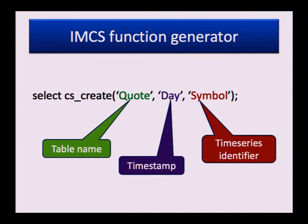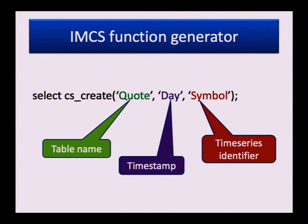Time series should have a timestamp attribute. Data is ordered by this timestamp, so the timestamp can be considered as a primary key, but it does not have to be unique. An optional third argument specifies the time series identifier. For example, for stock quotes we can use a symbol name like 'IBM' as identifier of the time series. If no time series identifier is specified, all data from the table is placed in a single time series.